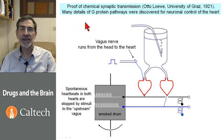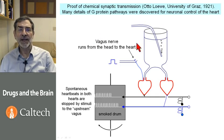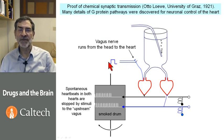Indeed, many details of G-protein pathways were discovered for neuronal control of the heart. It had been known for many years that if you electrically stimulate the vagus nerve, which runs from the head to the heart, the heart slows down or stops beating. In German, it was called the vagus nerve, which means wanderer.